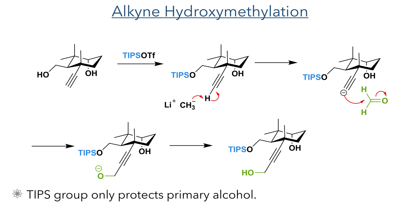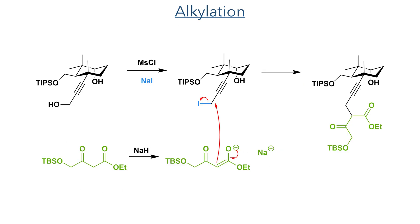First, the primary alcohol was protected as a TIPS group. The TIPS group is sterically demanding and selectively protected the primary alcohol without reacting with the more sterically hindered secondary alcohol present on the molecule. With this protecting group in place, the alkyne was deprotonated using methyl lithium to form an acetylide nucleophile. This reacted with formaldehyde, which upon workup produced the desired alcohol. Reaction of this primary alcohol with methyl chloride converts it into a good leaving group, which was then reacted with sodium iodide to produce a more reactive alkyne iodide species.